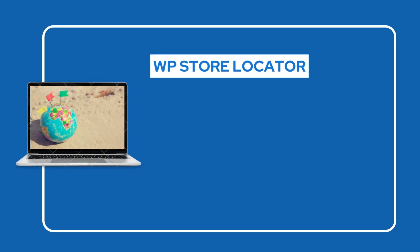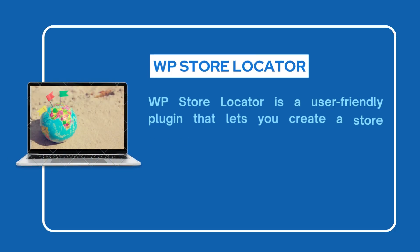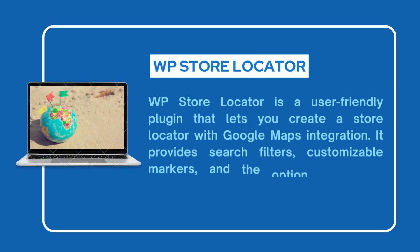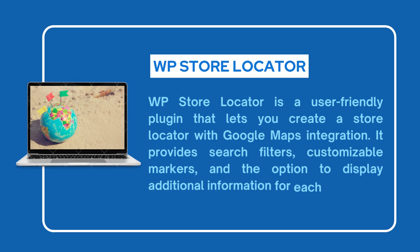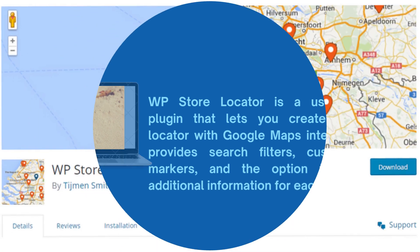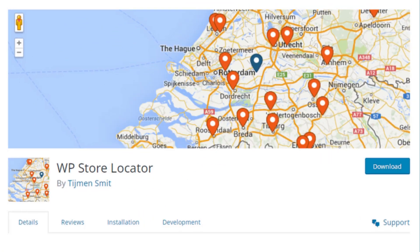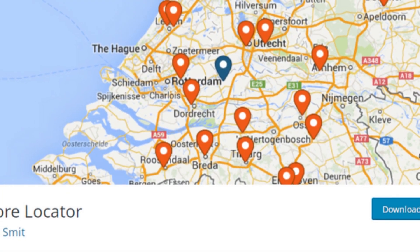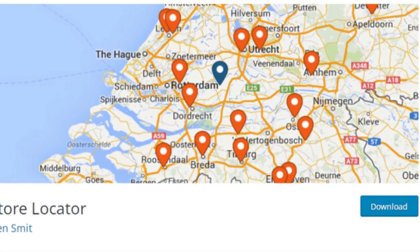The first plugin is WP Store Locator. This plugin is a user-friendly plugin that creates a Store Locator with Google Maps integration. It provides search filters, customizable markers, and the option to display additional information for each store.